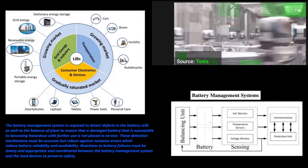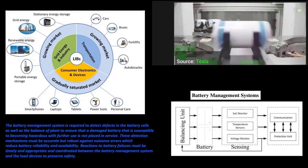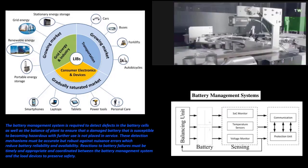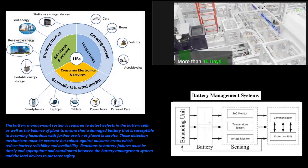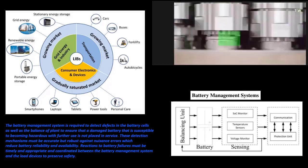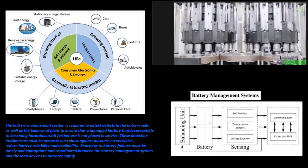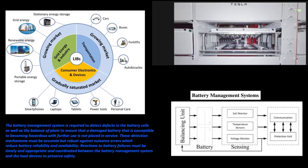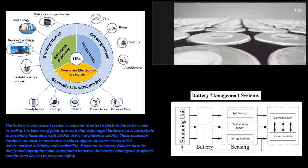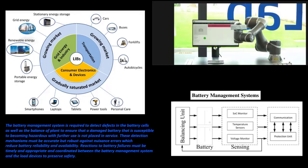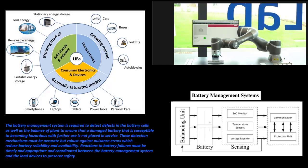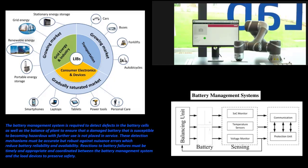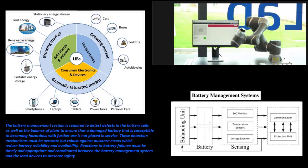The battery management system is required to detect defects in the battery cells as well as the balance of plant, to ensure that a damaged battery susceptible to becoming hazardous with further use is not placed in service. These detection mechanisms must be accurate but robust against nuisance errors which reduce battery reliability and availability.